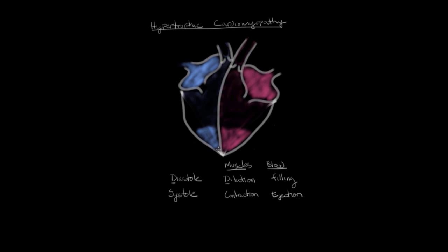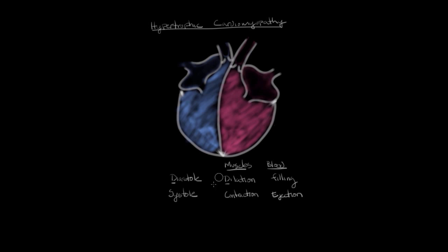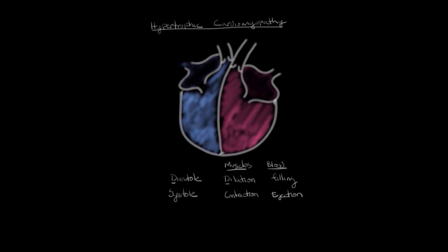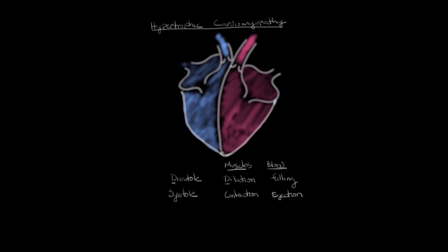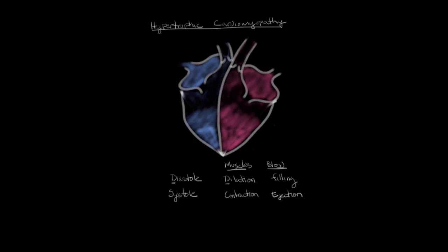A normal ejection fraction is between 50 and 75%. This is important because the ejection fraction can be used as a measure of systolic function — how well the heart is able to contract. We then go back into diastole where the muscles dilate and cause filling of the ventricles, and the cycle repeats.